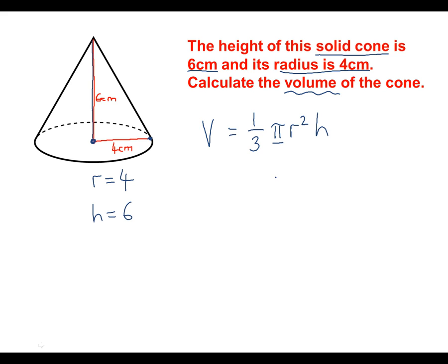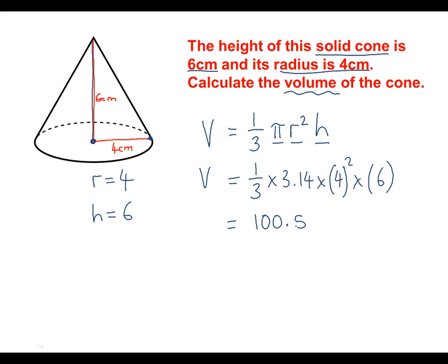We need pi, which is 3.14, the radius, which is 4 centimetres, and the height, which is 6 centimetres. So all we've got to do is put these numbers into our formula: volume = 1/3 × 3.14 × 4 squared × 6. Type this into a calculator and we get 100.5. Because it is a volume question, the units are centimetres cubed, so the volume of this cone is 100.5 centimetres cubed.